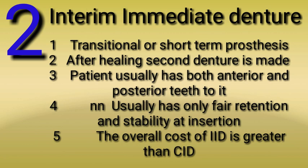Number two: interim immediate denture. Properties of interim immediate denture — number one: transitional or short-term prosthesis; number two: after healing, a second denture is made; number three: patient usually has both anterior and posterior teeth; number four: usually has only fair retention and stability at insertion; number five: the overall cost of interim immediate denture is greater than conventional immediate denture.